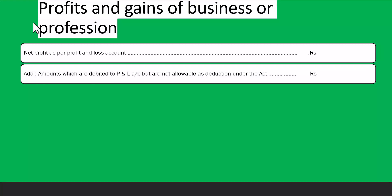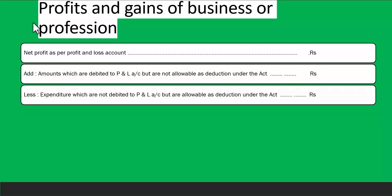For profits and gains of business or profession, you start with the net profit as per the profit and loss account. You add back amounts debited to the P&L account that are not allowable as deductions under the Act — for example, personal expenses of a director. You then deduct expenditures not debited to the P&L account but allowed under the Act, such as depreciation on assets.